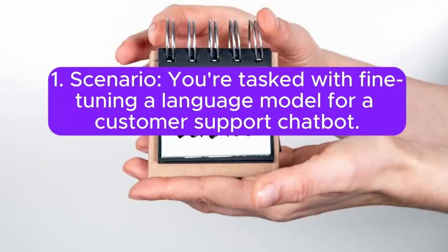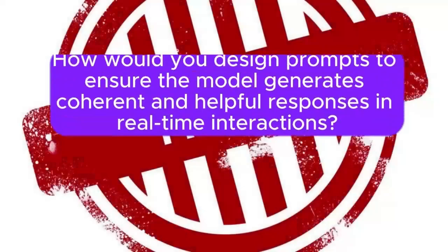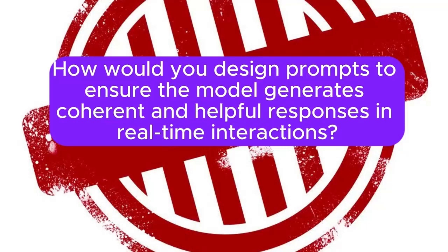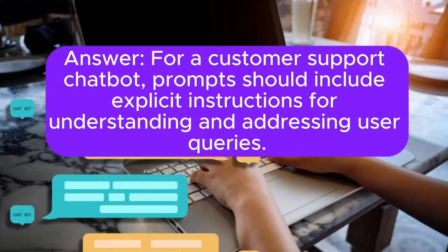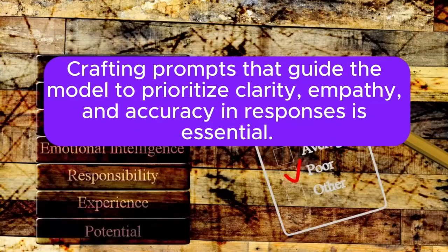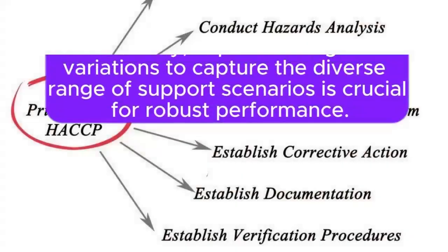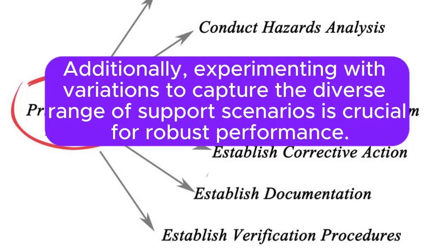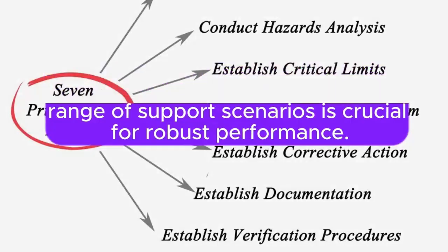Scenario 1: You're tasked with fine-tuning a language model for a customer support chatbot. How would you design prompts to ensure the model generates coherent and helpful responses in real-time interactions? Answer: For a customer support chatbot, prompts should include explicit instructions for understanding and addressing user queries. Crafting prompts that guide the model to prioritize clarity, empathy, and accuracy in responses is essential. Additionally, experimenting with variations to capture the diverse range of support scenarios is crucial for robust performance.